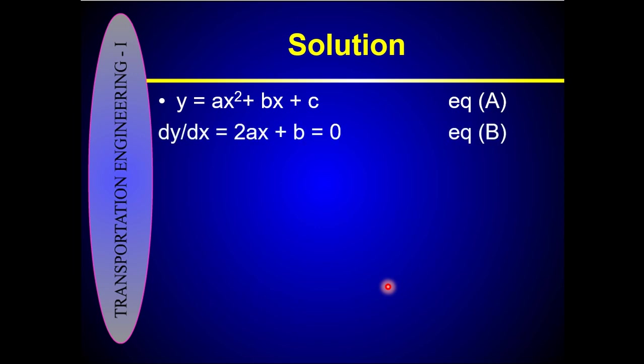To find the lowest point on the curve, check the signs of G1 and G2. If the initial and final grades have different signs, you can find the lowest point of the vertical curve by using the first derivative of the parabolic function. Setting the first derivative equal to zero and solving gives you the stationing of the lowest point. Substituting that x-value into the main parabolic equation gives the elevation.